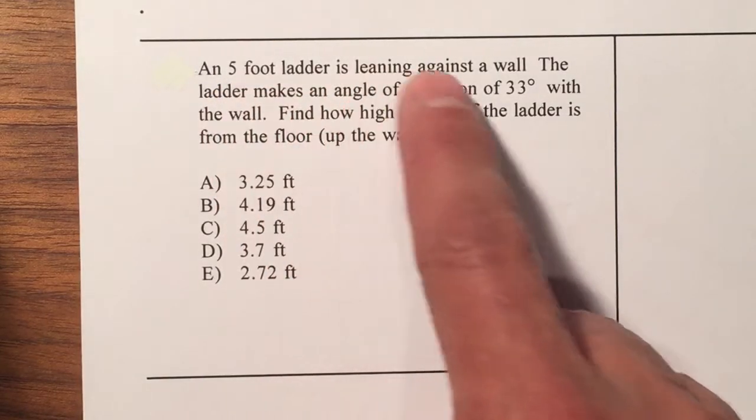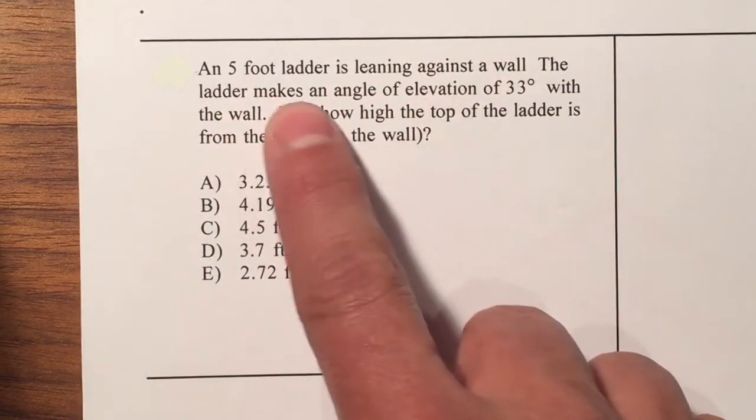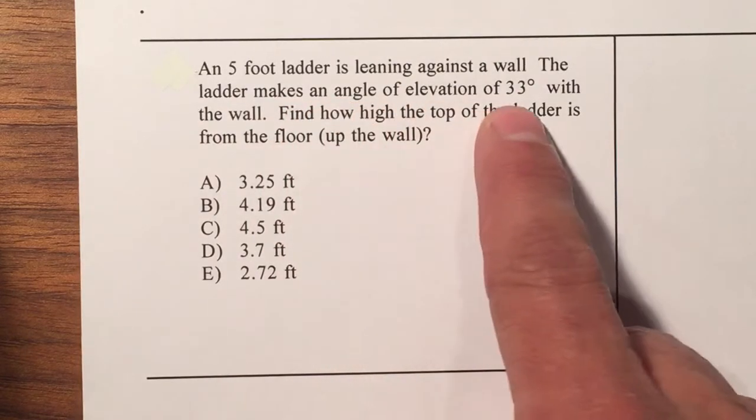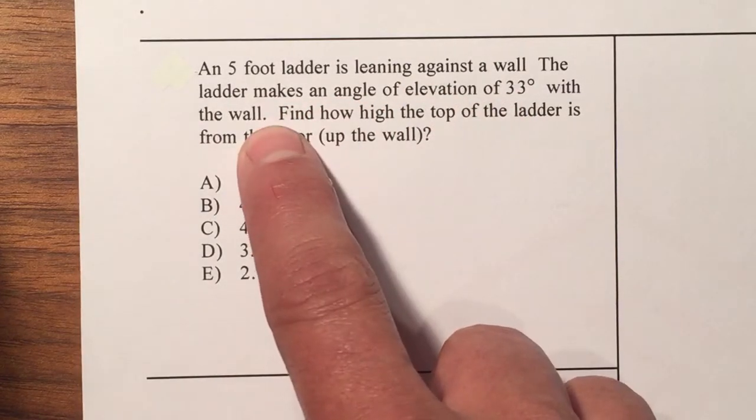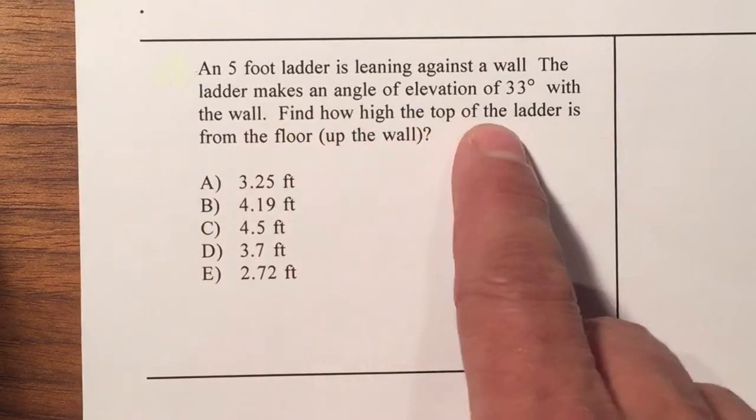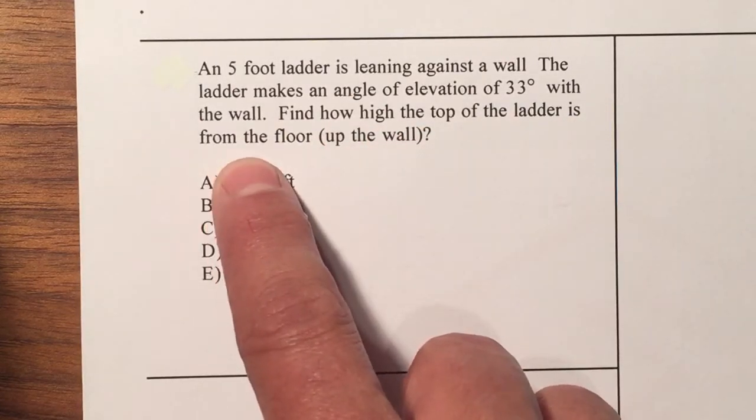A five-foot ladder is leaning against the wall. The ladder makes an angle of elevation of 33 degrees with the wall. Find how high the top of the ladder is from the floor up the wall.